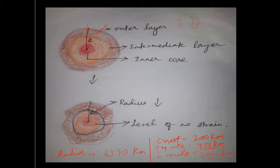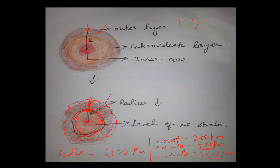The lower mantle extends from about 700 to 2,900 kilometers. When contraction takes place, this region cools and contracts, reducing the radius of the outer crust and hence the radius of the earth. The upper mantle also gets cooled, but is less affected. The intermediate layer acts as the level of no strain, as this region collapses and thins out under the continuous collapsing forces.